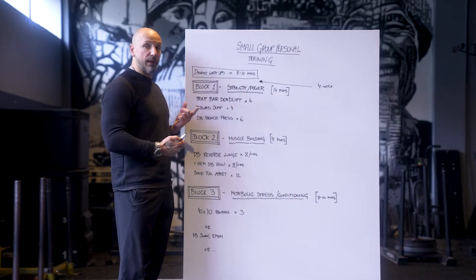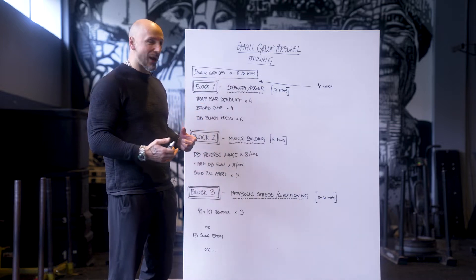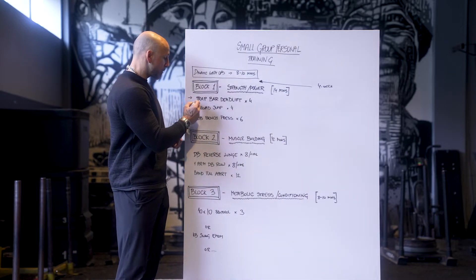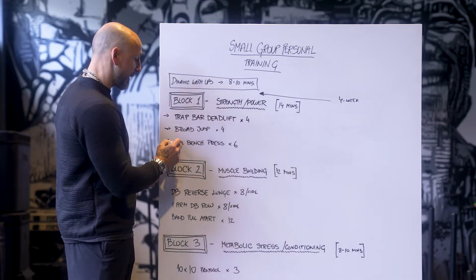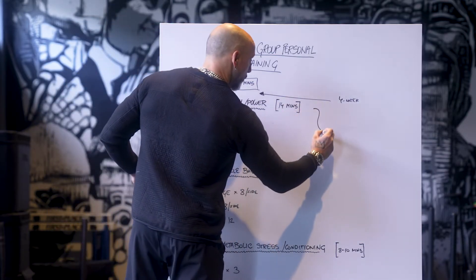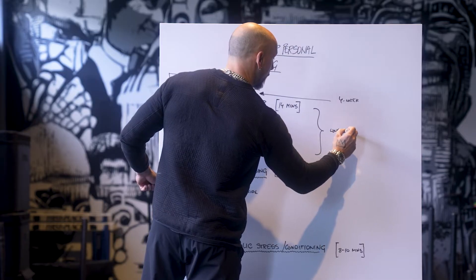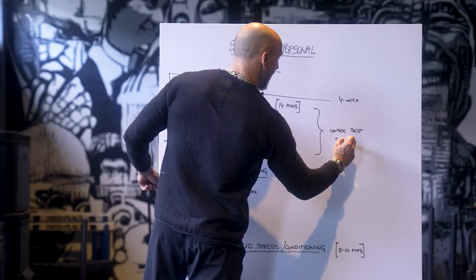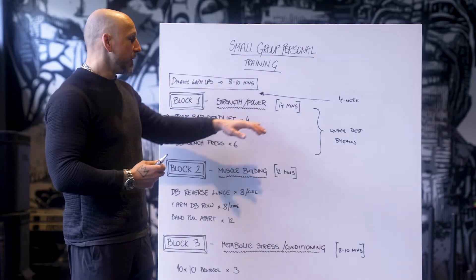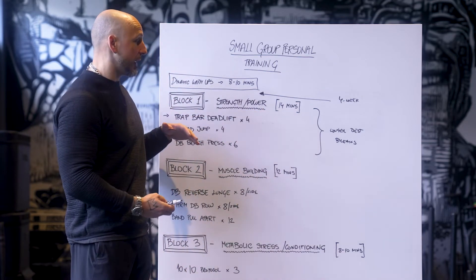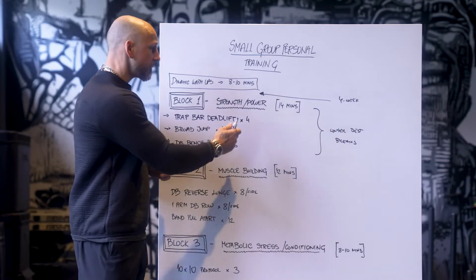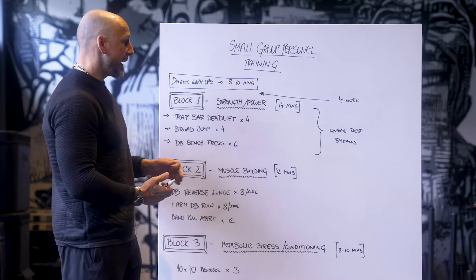Block one is always going to be strength power. Or should I say majority of the time, it's really focused on strength with some power component. This example here, we have a trap bar deadlift for a set of four, broad jumps for a set of four, and dumbbell bench press for a set of six. Because this is strength and power, we're taking longer rest breaks. Even though we have a block of time outlined, I've optimized it over a long time. 14 minutes is in that hour-long session, because remember, you got breaks in between too.